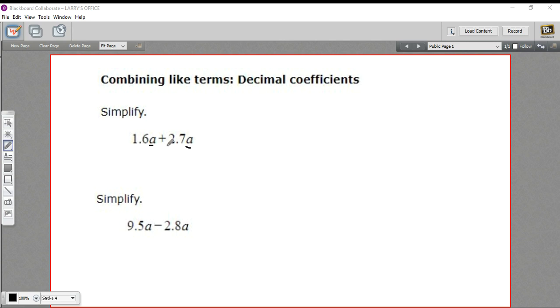So we can just add the number parts. So this is really 1.6 plus 2.7. So 6 plus 7 is 13, carry the 1. So that's 4.3. So our answer here is 4.3a.